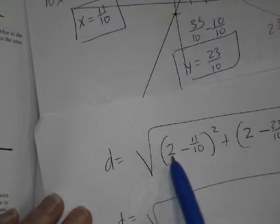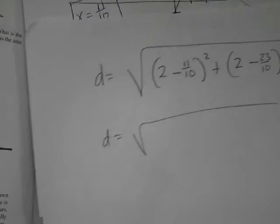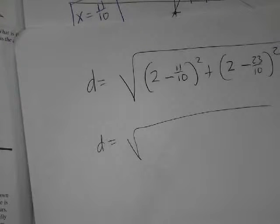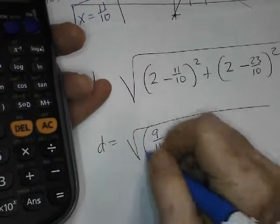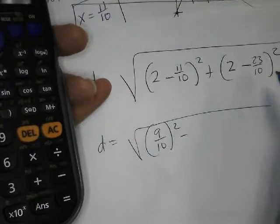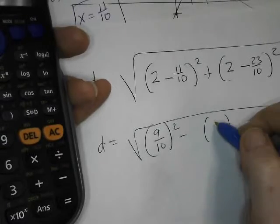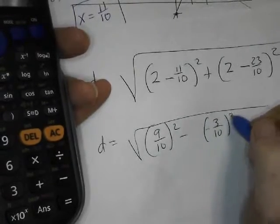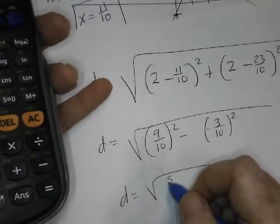That's 20 tenths minus 11 tenths. Is that 9 tenths? I said I could handle it. Then I'm asking. What's 20 tenths minus 11 tenths? 20 minus 11 is 9. Yep, that's 9 tenths. And that would be 20 tenths minus 23 tenths. So that would be negative 3 tenths, I think. But when it gets squared, it won't matter. It's going to be 81 over 100. It's going to be 9 over 100.